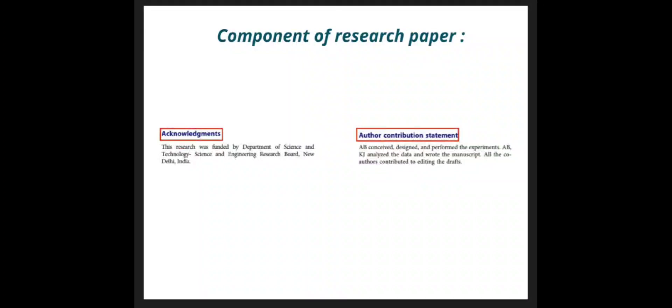In the acknowledgments section, funding agencies and people are acknowledged for their contribution in providing facilities, funds, materials, or other help. Author contributions tell who has done what in the research paper.